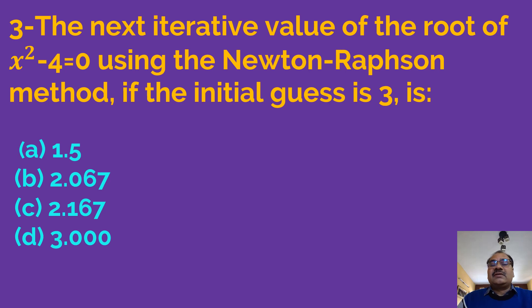Third is: the next iteration value of the root of x square minus 4 equals 0, this is a polynomial, using the Newton-Raphson method, if the initial guess is 3. The alternates are 1.5, 2.067, 2.167 and 3.00.